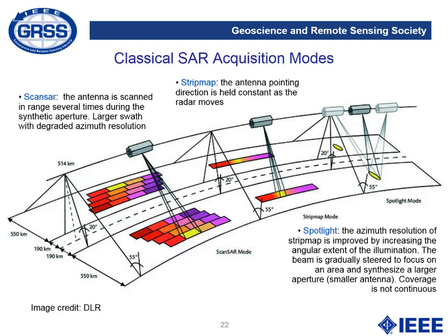There are different SAR acquisition modes. The typical one is stripmap, where the antenna pointing direction is held constant as the radar moves, exploring strips over the Earth. In ScanSAR, the antenna is scanned in range several times during the synthetic aperture, achieving larger swaths but degrading azimuth resolution. In spotlight mode, the azimuth resolution of the stripmap case is improved by increasing the angular extent of illumination — the beam is steered to focus on an area, synthesizing a larger aperture — but coverage is not continuous.